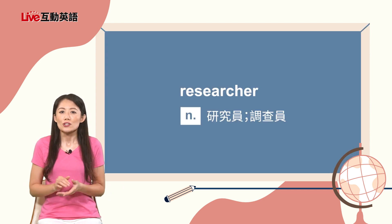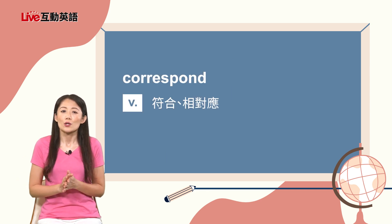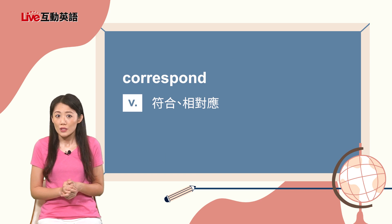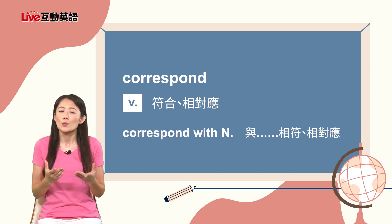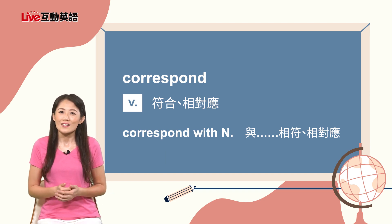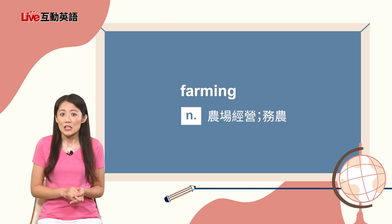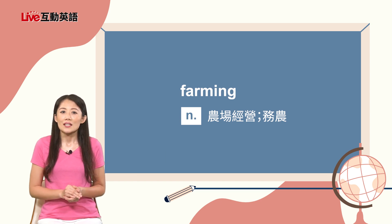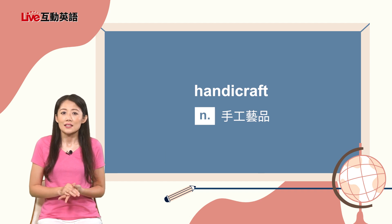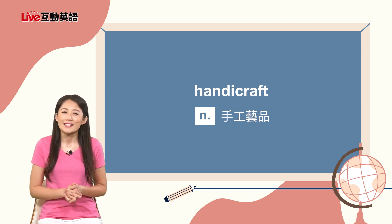好，我们先来看单字。Researcher表示研究员或调查员。Correspond这个动词表示符合或相对应，我们可以用correspond with加名词，表达与什么相符相对应。Shane老师提到farming，指农场的经营或务农的意思。还有handicraft，h-a-n-d-i-c-r-a-f-t，handicraft表示手工艺品。